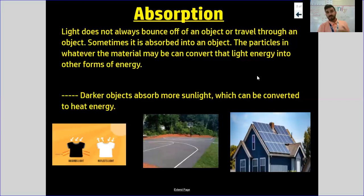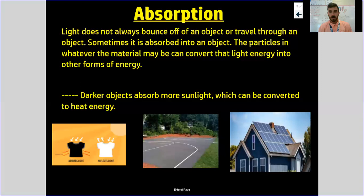So I said we were going to cover one more thing that light tends to do, and sometimes light can be absorbed. You have probably experienced this a thousand times but never really thought about it. Light does not always bounce off of an object or travel through an object — sometimes it is absorbed into an object. The particles in whatever the material can be converted into other forms of energy.